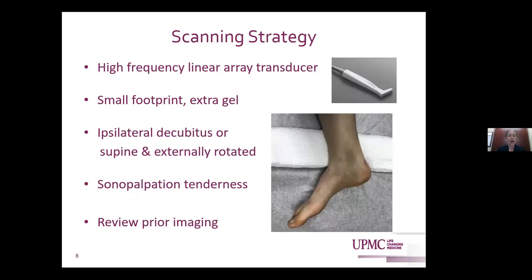For scanning the ankle, you want a high-frequency linear array transducer with a small footprint using extra gel to maintain contact over bony prominences. You can have the patient in ipsilateral decubitus or supine with their lower limb externally rotated to give access to the medial ankle. It can be helpful to put a towel under the ankle. Use sonopalpation tenderness to your advantage — have the patient mark the area as you're going through, and review prior imaging.